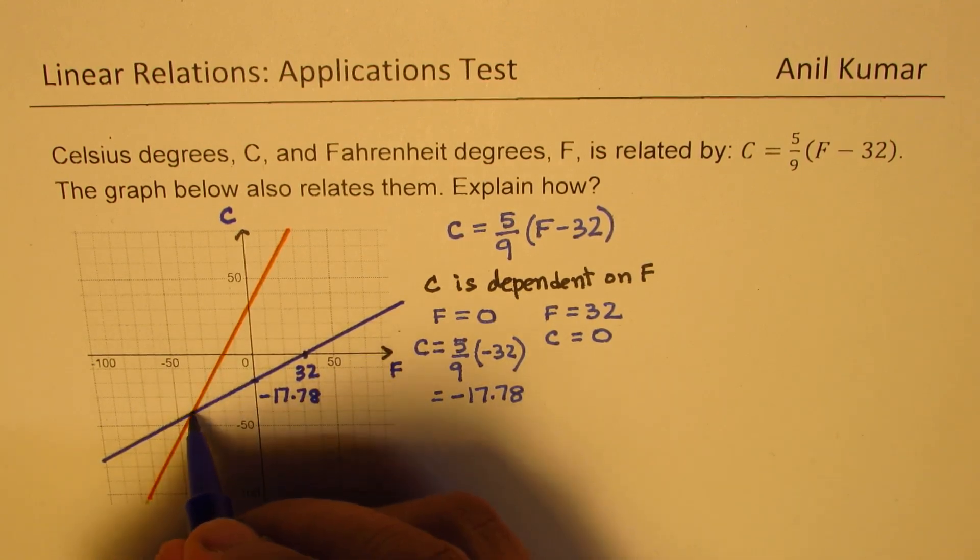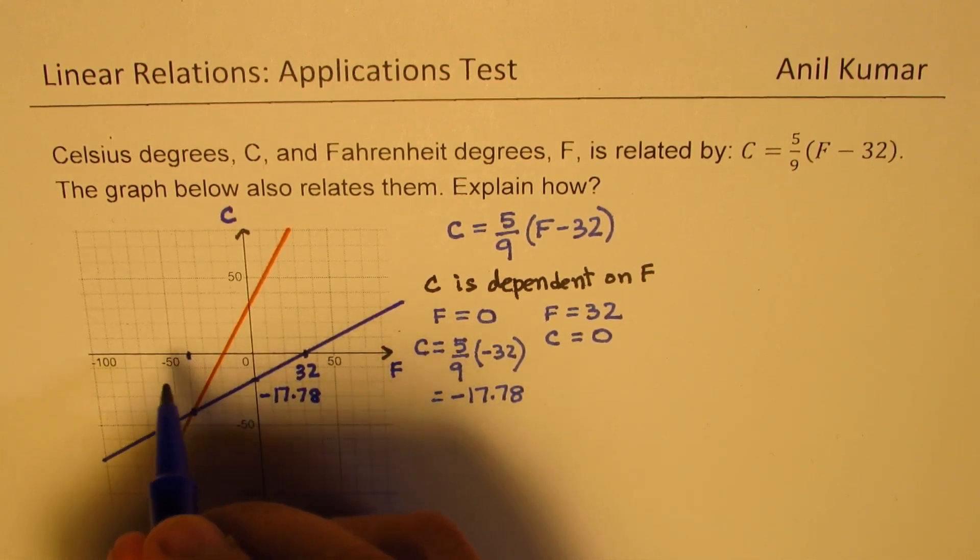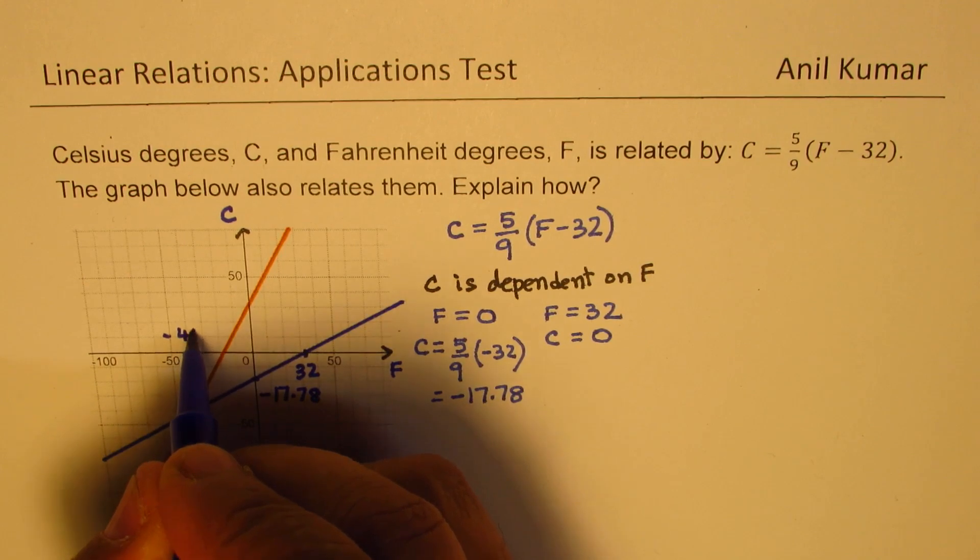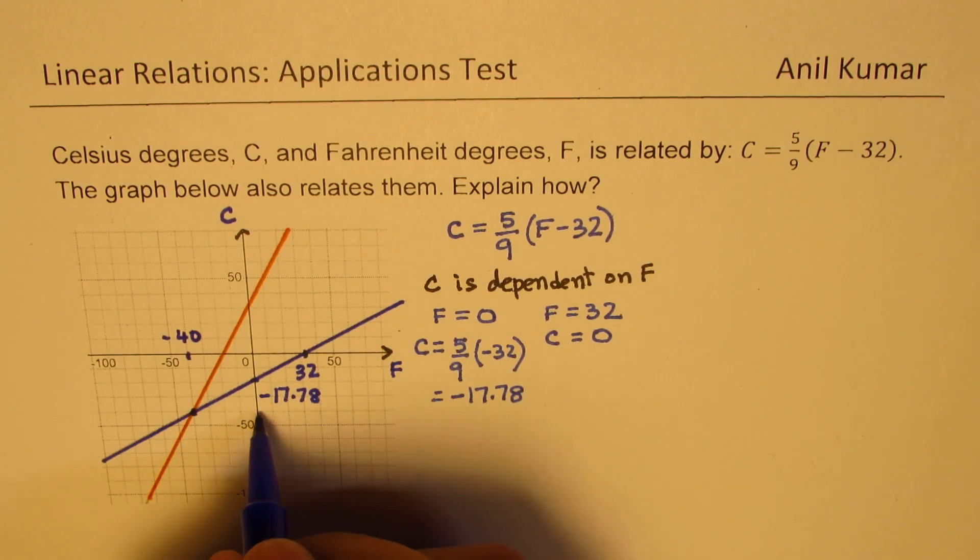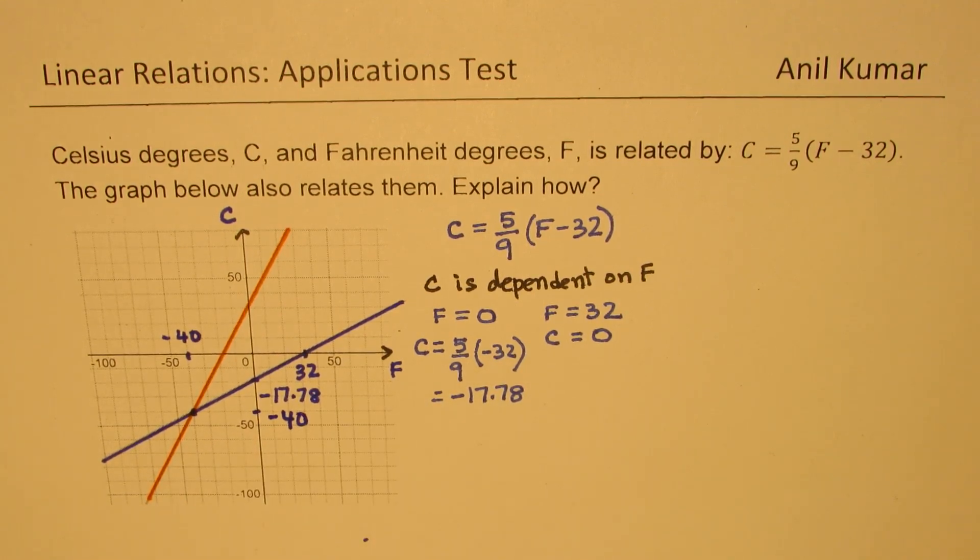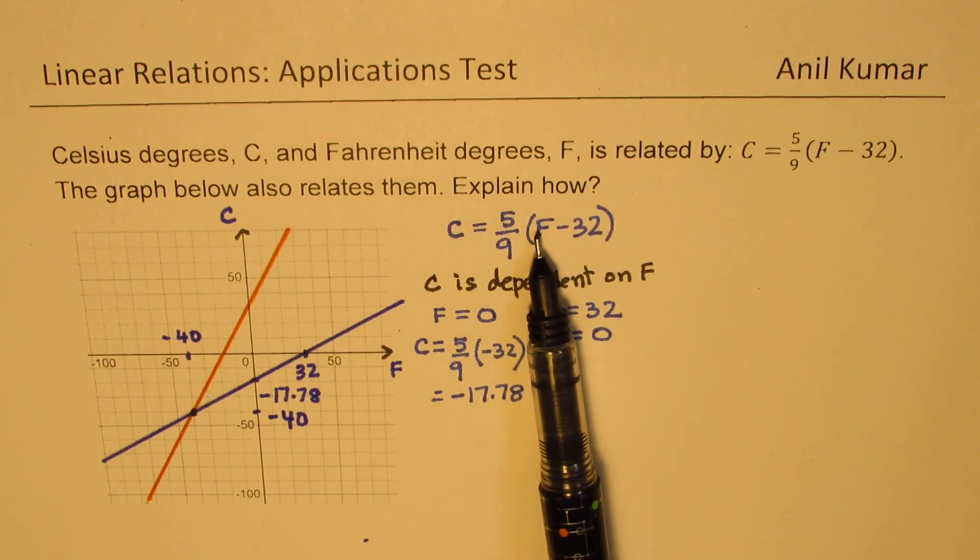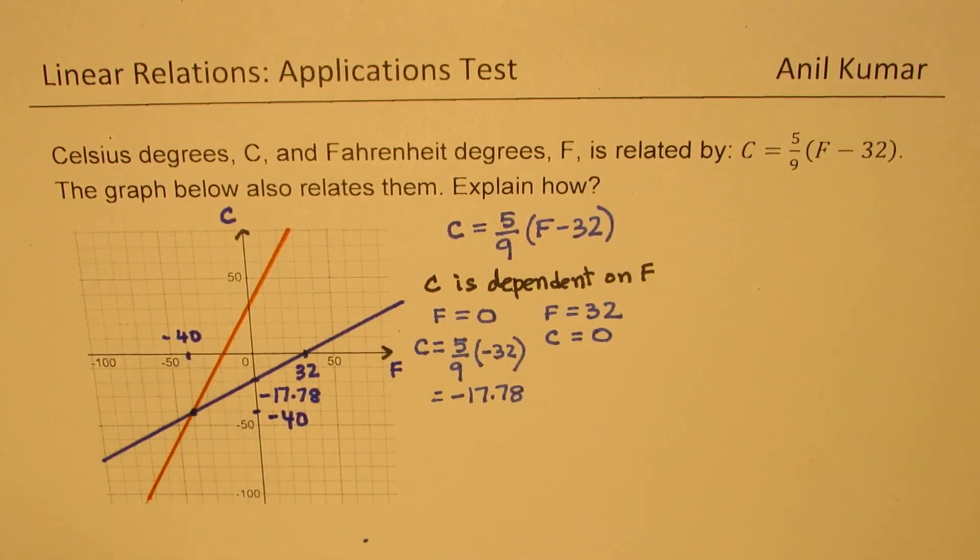Now, this point here is very interesting. It seems the point is at minus 40, minus 40. Let us see, what is the value of C when F is equal to minus 40? Let us calculate this value also.